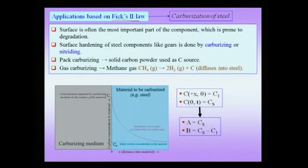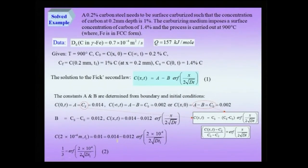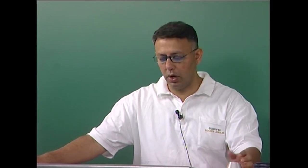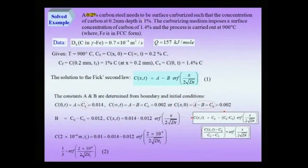We now consider an important application of Fick's second law: carburizing of steel. In carburizing, we start with a specimen having initial carbon concentration C₀ (typically about 0.2%), and expose it to a carburizing atmosphere to introduce more carbon at the surface, raising the surface concentration to perhaps 1% or higher.